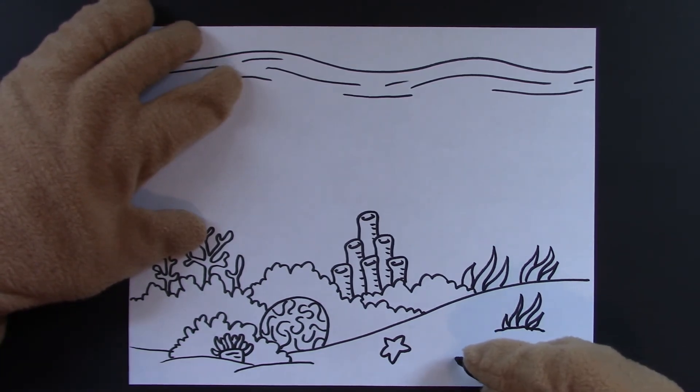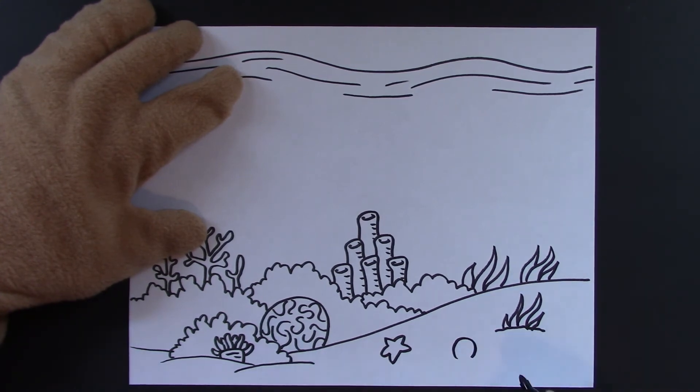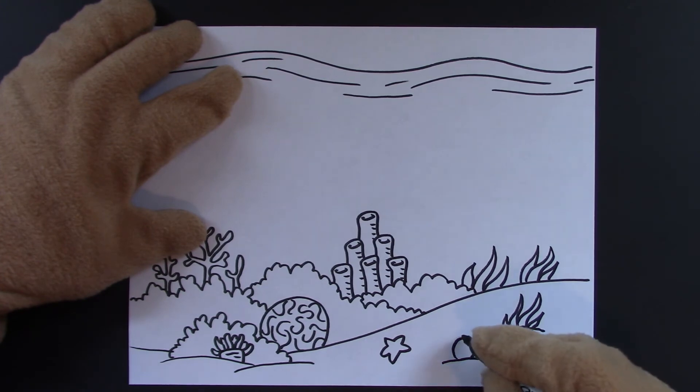And the last thing we'll do down here is a sea urchin. A nice little circle like the brain coral, but smaller. We'll make a line for sand. And then we'll draw long spines all the way around.